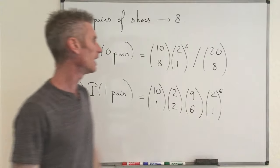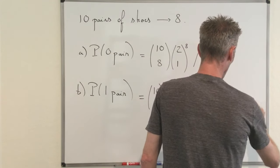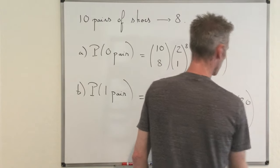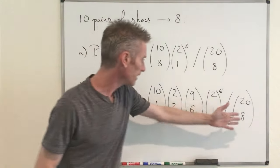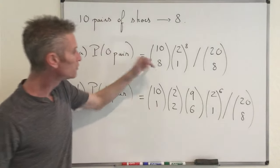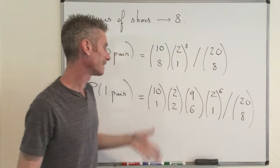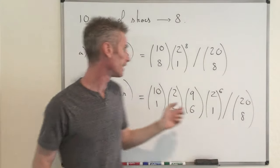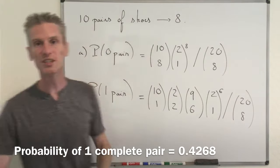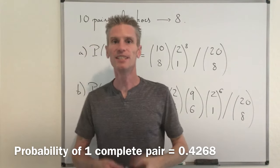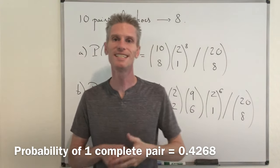As before, you need to divide by 20 choose 8, the size of the sample space, to get your probability. Using a calculator to compute that number, you would find that the probability of having exactly one complete pair is approximately 0.4268.